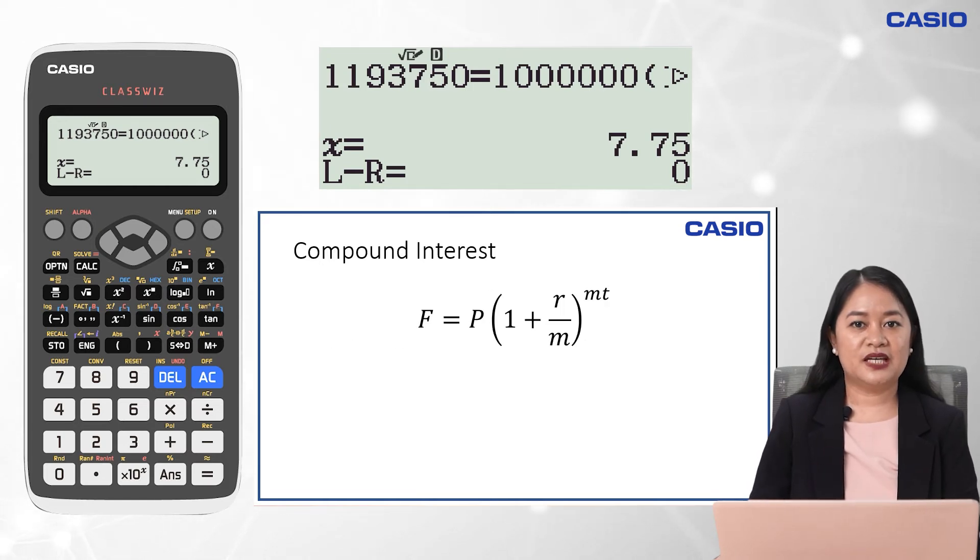The same method can be applied when a word problem involves compound interest. For compound interest, the maturity or future value is computed using this formula where m is the number of conversion period for 1 year. Just the same, not at all times, the unknown is the maturity or future value. It can be the principal, the annual interest rate, the number of conversion period for 1 year, or the period of time in years.